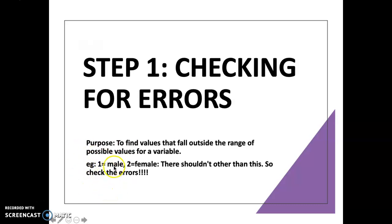So what would be the purpose of checking for errors? To find values that fall outside the range of possible values for a variable. For example, number one is male, number two is for female. They shouldn't other than this. So check the errors. Sometimes we are human, we tend to do mistakes. We label number one for male and number two for female. But there is a possibility during the process of key in the data, you key in wrongly. Maybe you put number three, or maybe 11, or maybe 22. Because key in data is not an easy process for us to do. So sometimes, we may do errors. So you need to check for errors first.